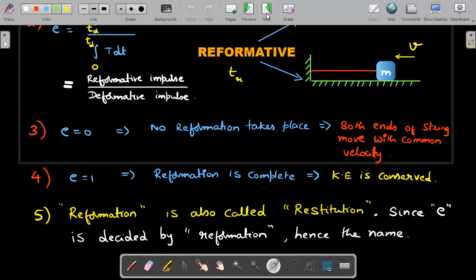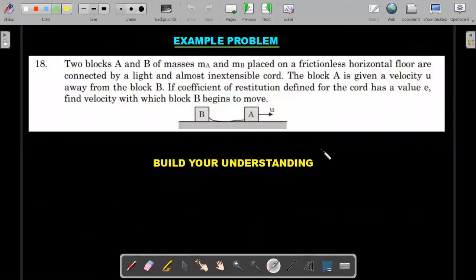Now we'll apply that to the pathfinder build your understanding problem 18. You may check it in the book. Instead of my simplistic example where I had a wall on the left hand side, this fellow has given a block B of mass MB, and A is given a rightward velocity u. He's talking about light and almost inextensible chord but defined by the coefficient of restitution E. If you want to pause this and test whether you understood the concept, just pause the video here, try it out, and then go through the solution.